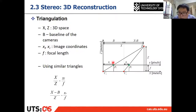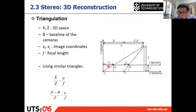From the similar triangles, we can say this distance divided by that one is equal to this distance divided by that one. This distance is the focal length f, this distance is xL — the location of PL on the left image — this is the z-coordinate Z of the 3D point P, and this is the x-coordinate X of the 3D point P.